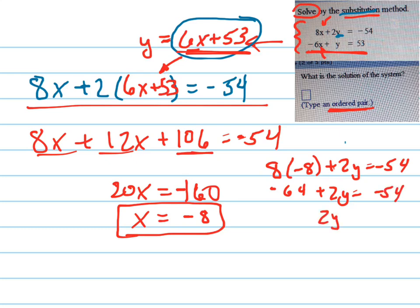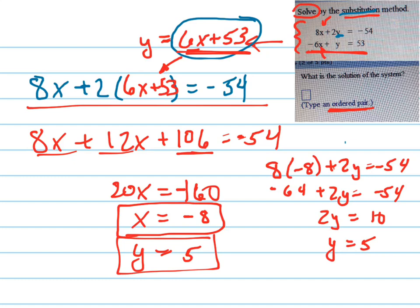I add 64 to both sides and I get 10. Divide by 2, and I get 5. Now, before I write this answer in for the solution, I'm going to check to make sure that it worked. I'm going to plug negative 8 for x and 5 for y back into the bottom equation up here. Since I used the top equation to find y, I'm going to now plug it into the bottom equation.